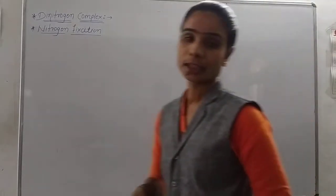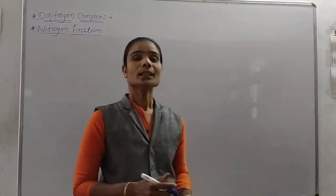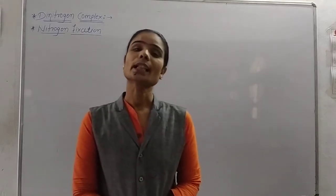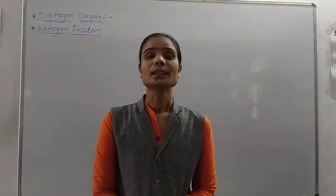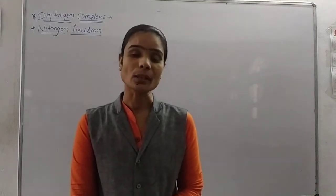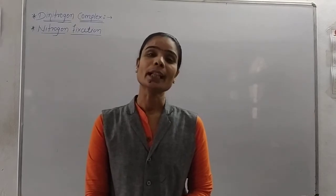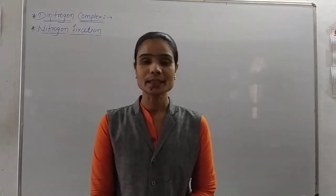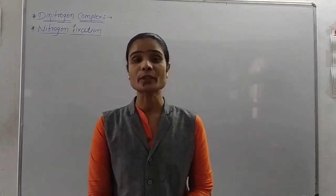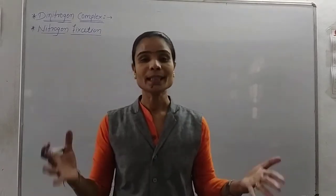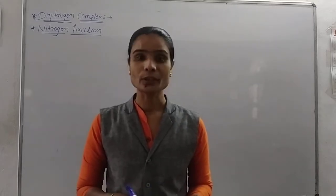Hello friends, welcome again. In the last lecture we saw the synthetic dioxygen carrier complexes, and before that we already saw the naturally occurring dioxygen complexes which are hemoglobin, myoglobin, hemrythrin, and hemocyanin. After that we saw the synthetic or artificial dioxygen complexes prepared in the lab which act as oxygen carriers for the living system.